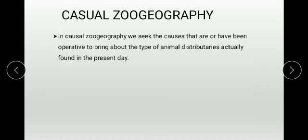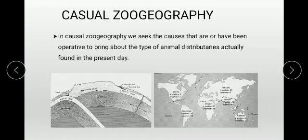Now, causal zoo geography. In causal zoo geography, we examine the causes that are or have been operative to bring about the types of animal distributions actually found in the present day.